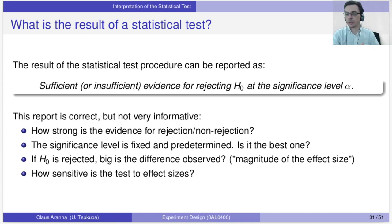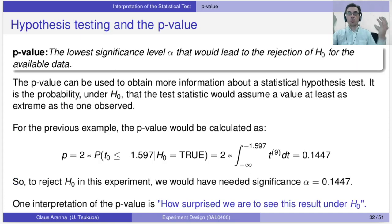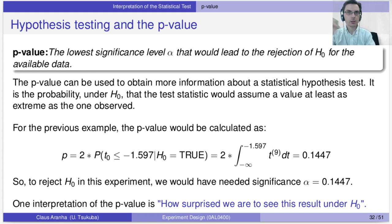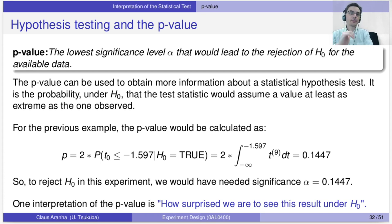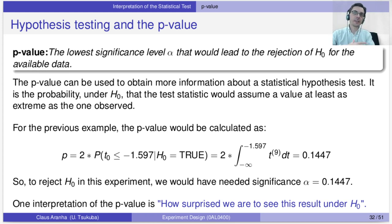One way to show some of this information is the p-value. A lot of people have heard of p-value before — it's super important but also sometimes used incorrectly. The p-value is defined as the lowest significance level at which the null hypothesis would be rejected. It's the lowest possible confidence level you could use such that the null hypothesis would still be rejected for the test.